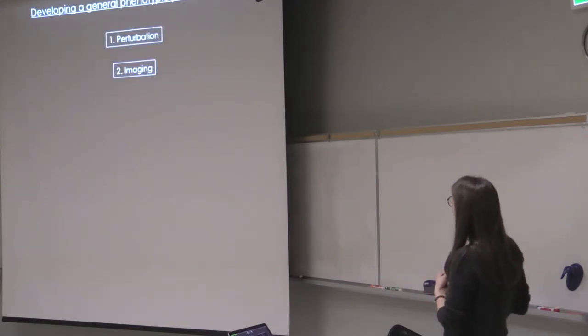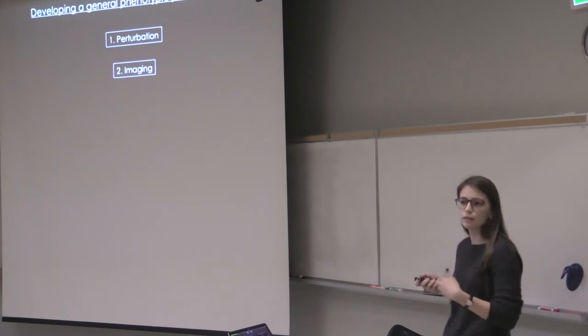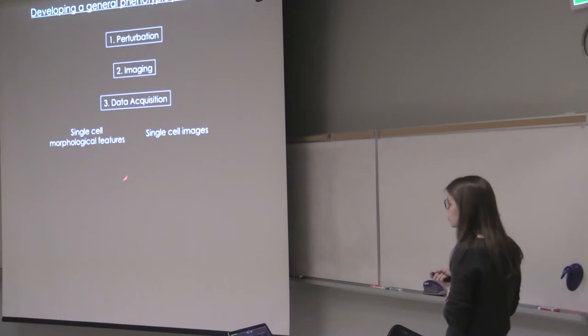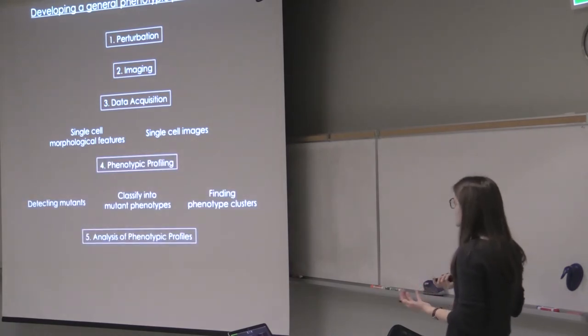So I'd just like to walk you through this phenotypic profiling pipeline. First we have the perturbation and it can be either genetic or chemical. And then we're doing imaging with confocal fluorescent microscopy in our lab. In order to acquire the data, we can look at the traditional way of extracting features from single cells or we can look at single cell images directly.